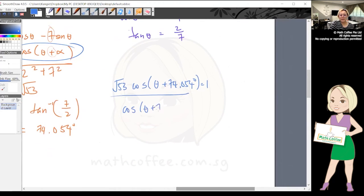So cos(θ + 74.054°) = 1/√53. Cosine positive, go through first and fourth quadrant. Do the basic angle, and don't forget because this theta is not just theta alone.